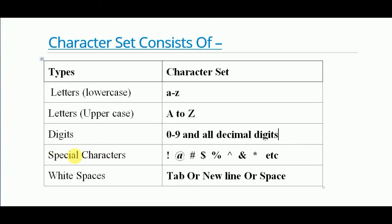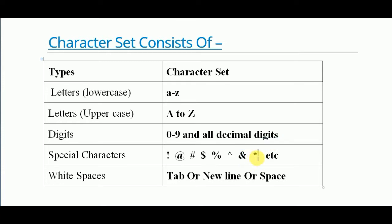Next comes special characters. Special characters like the exclamation mark, then the at-sign, then the hash or number sign, next the dollar sign, then percentage, then the caret, then the ampersand, and the asterisk — and many more special characters are used in the character set of C.